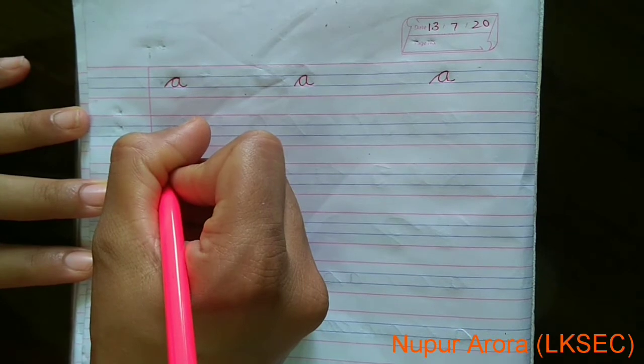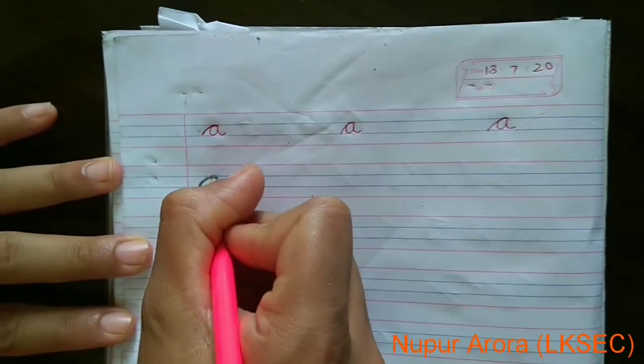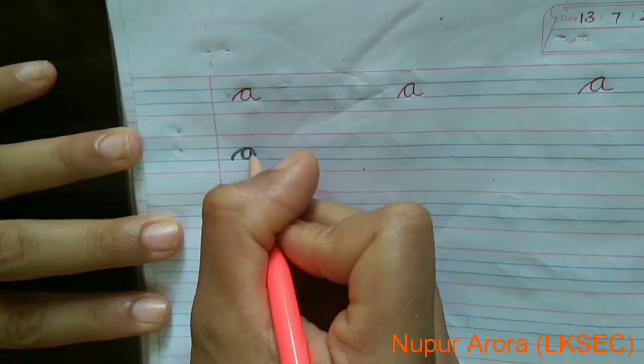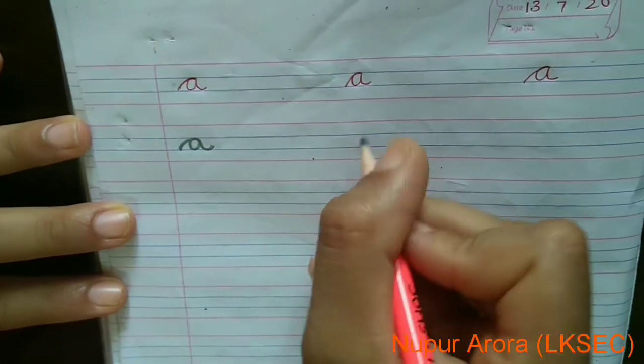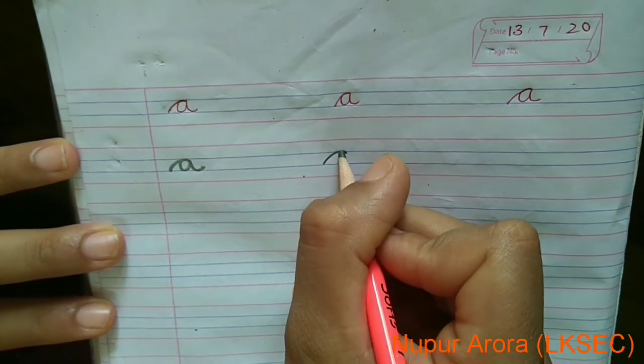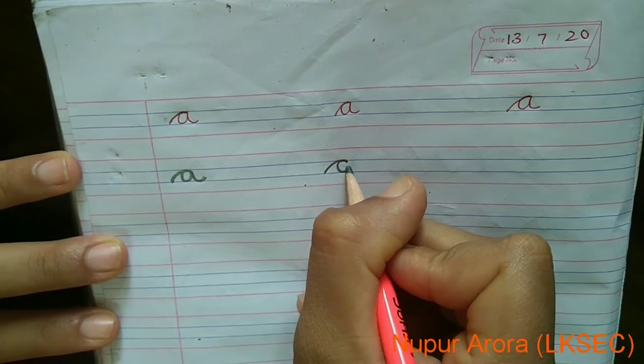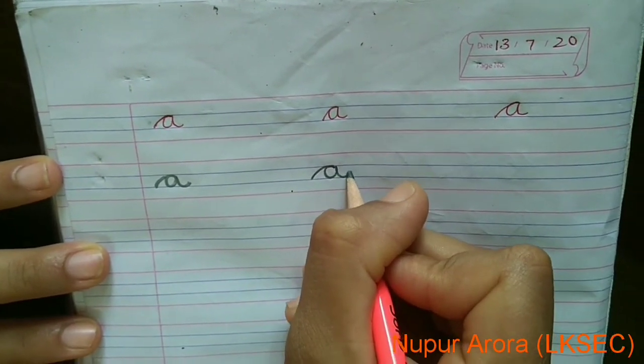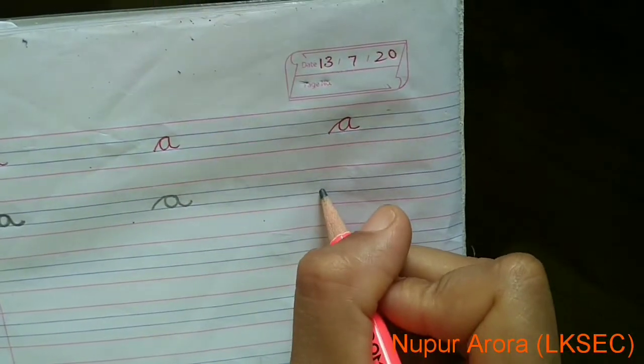You have to make like this. Like this. See, you have to make like this. See, like this. Like this, we will create A in cursive writing.